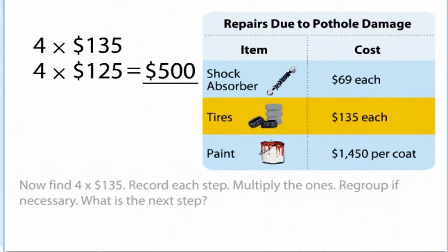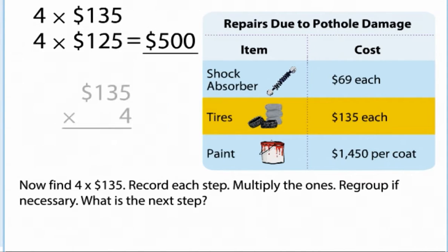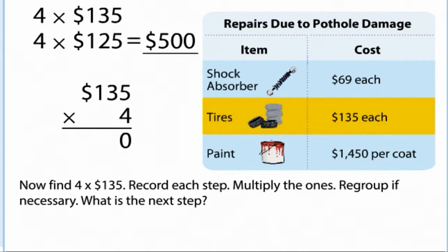Now find 4 times $135. Record each step. Multiply the ones. Regroup if necessary. What is the next step?